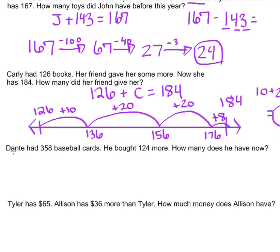For our number sentence, follow the problem in order. Dante had 358 baseball cards. He bought 124 more. If he bought some more to add to his collection, then we are adding 124 to 358. How many does he have now?